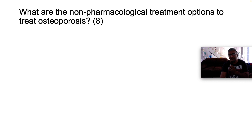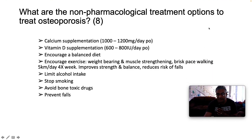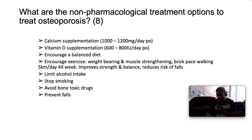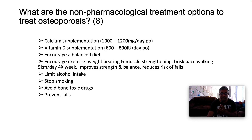What are the non-pharmacological treatment options for osteoporosis? Calcium supplementation — the recommended daily allowance is 1000 to 1200mg per day. Vitamin D supplementation at 600 to 800 international units per day. Encourage a balanced diet and exercise — weight-bearing and muscle-strengthening, such as brisk walking at least 5km per day four times a week. Improving strength and balance reduces fall risk. Also limit alcohol, stop smoking, avoid bone-toxic drugs, and prevent falls.